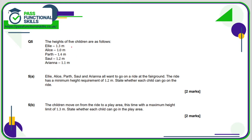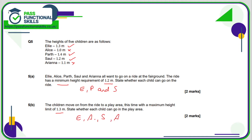Here we've been given the heights of five children and the ride has a minimum height requirement of 1.2, so the children need to be taller than 1.2. Ellie can go, Alice can't, Path can, Saw can, Ariana can't — so the answer is Ellie, Path, and Saw. For part b, there's a maximum of 1.3, so we're looking for people shorter than 1.3: Ellie just makes it, Alice can get in, Path cannot, Saw can, and Ariana can as well.